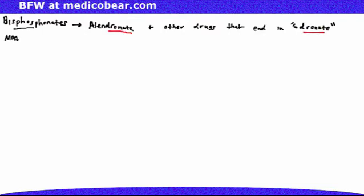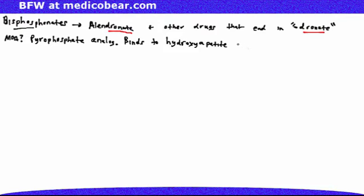Mechanism of action: bisphosphonates are a pyrophosphate analog. They bind to hydroxyapatite in bone, inhibiting osteoclast activity.